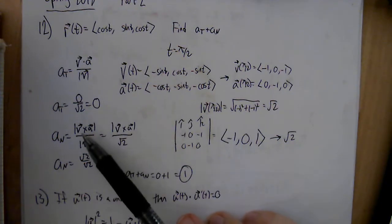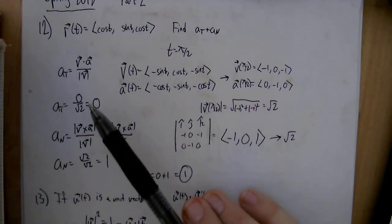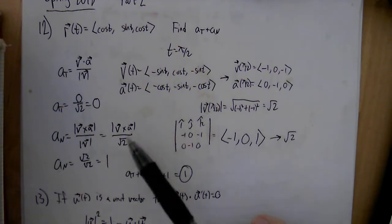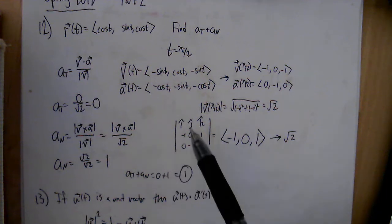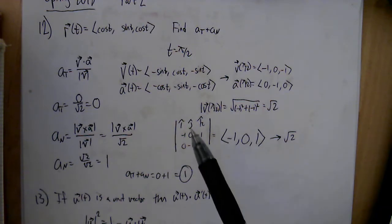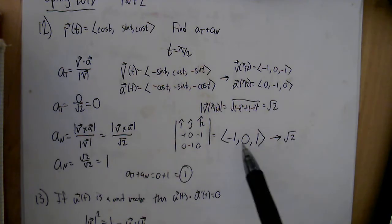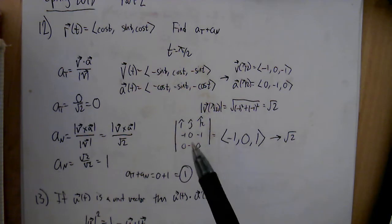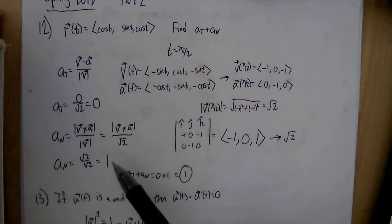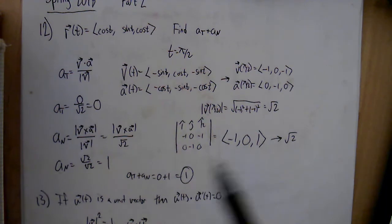The formula for normal acceleration is the magnitude of the cross product of v and a divided by the magnitude of v. The magnitude of the velocity vector is root 2. Computing the cross product: the i component gives negative 1, the j component gives 0, and the k component gives 1. The magnitude of this vector is root 2. So root 2 divided by root 2 gives 1 for the normal component. Therefore a_T plus a_N is 0 plus 1, which equals 1, and that is one of the answer choices.